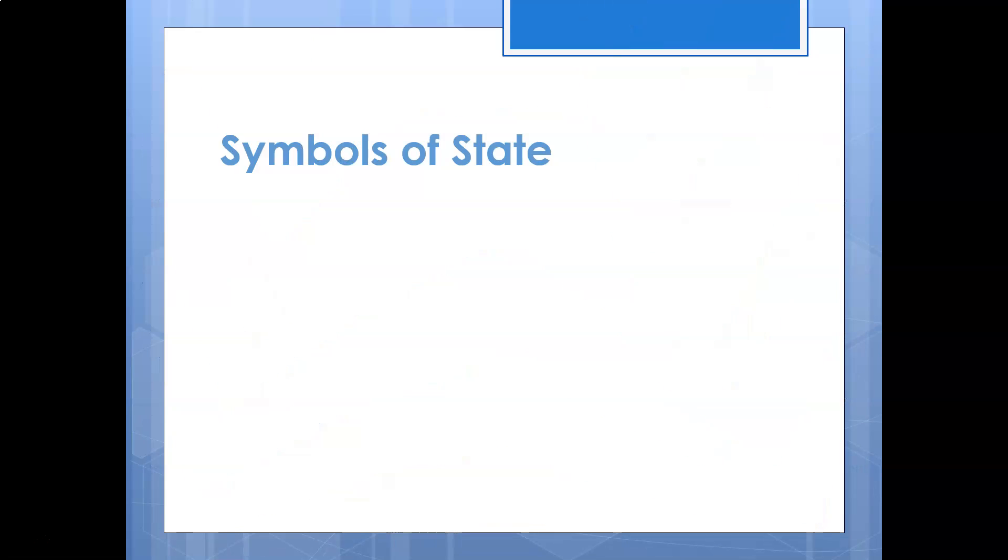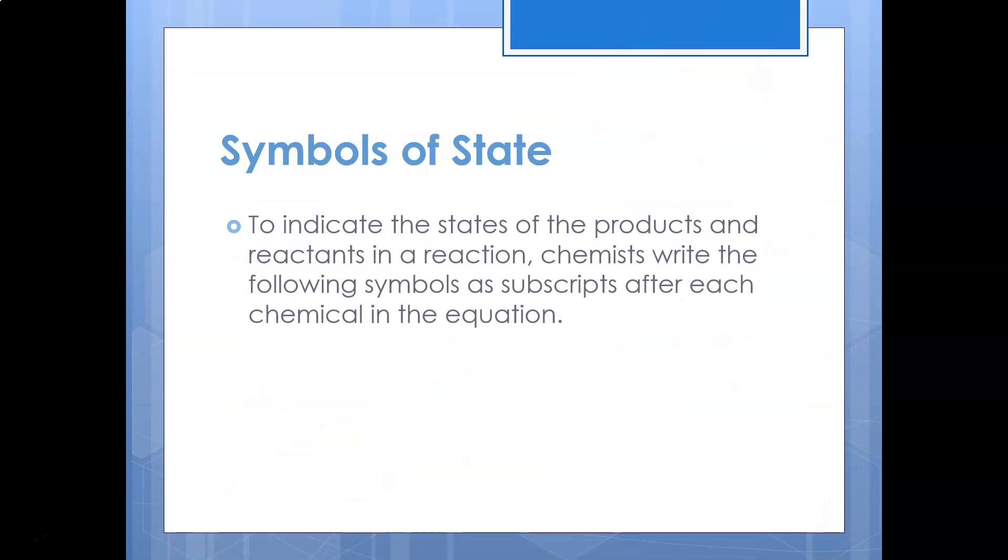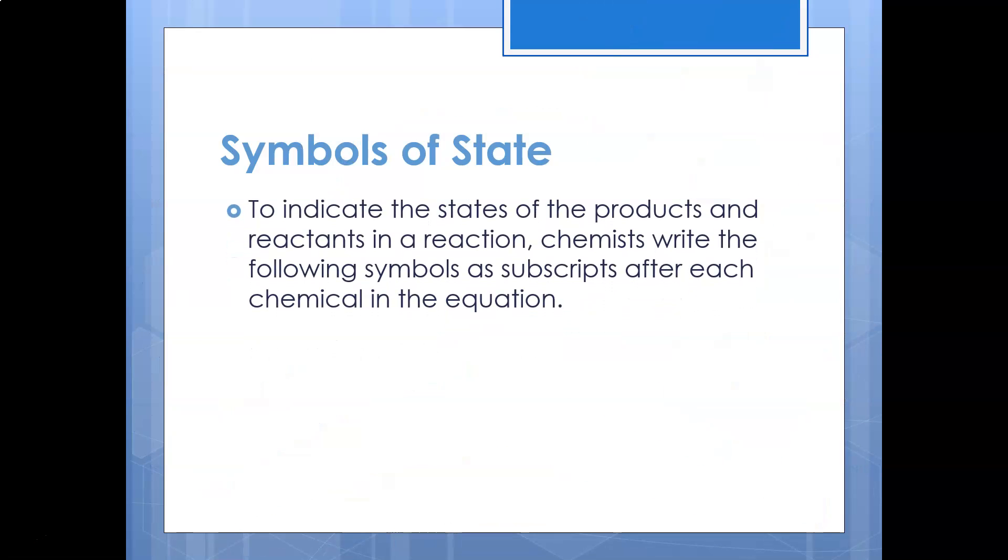Symbols of state: sometimes when we do a chemical reaction we actually need to show whether the reactants or products are solids, liquids, gases or aqueous. So sometimes we'll write small letters in subscript to show this. Solid being a lowercase S, liquid being lowercase L, gas being lowercase G and aqueous being lowercase AQ.